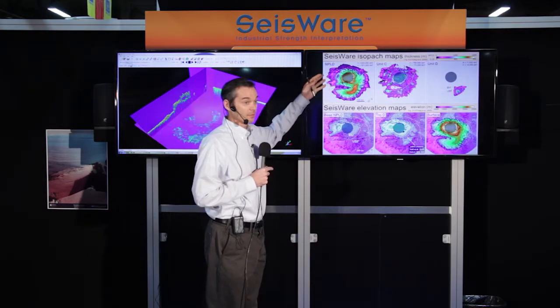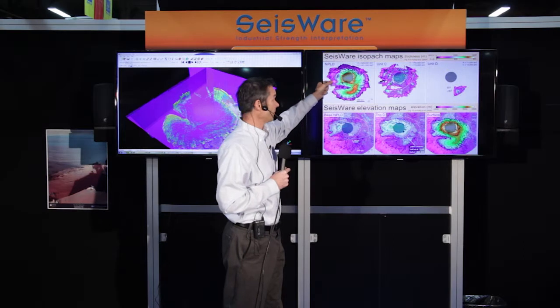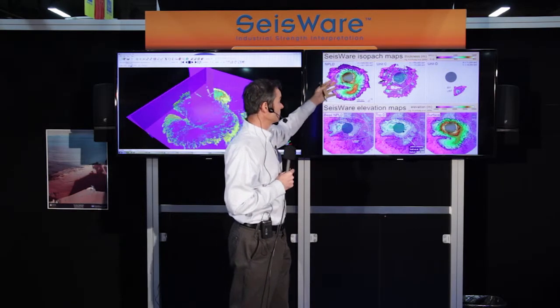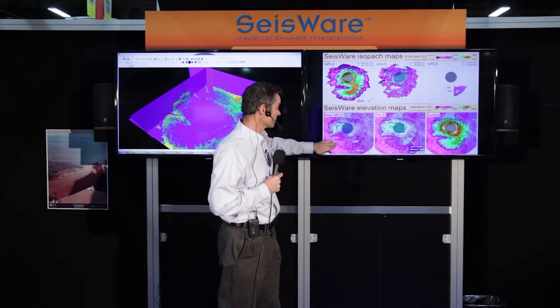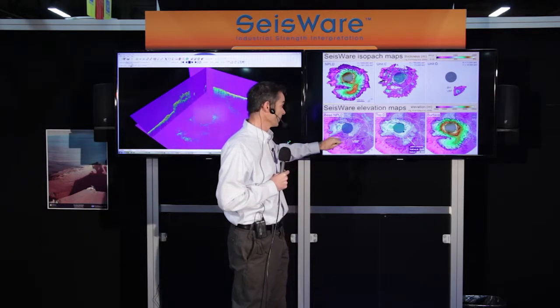These are maps created from those interpretations in SizeWare — all thickness maps. The top one shows the total thickness of those layers overlying the basal unit. If you strip those layers off, you can produce an elevation map showing the basal unit and the surroundings. We can now very easily delineate where that basal unit is in the subsurface. The green line for reference is where people thought it was just based on the visual surface imagery.